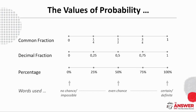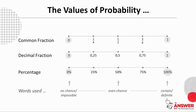Before we get stuck into some examples, let's have a look at how we indicate probability. Probability values range from zero to one or a hundred percent, where a zero probability means there is no chance of the event happening or that the event is impossible, all the way through to a probability of one or a hundred percent, which indicates the event will definitely happen or is certain to occur. We can use fractions, decimals, or percentages to indicate the probability of an event occurring.